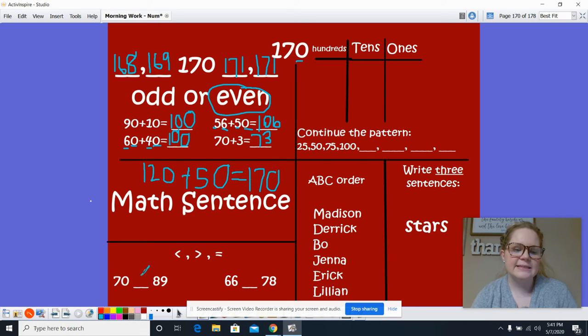70 is less than 89 and 66 is less than 78. We have 100, seven tens and zero ones.